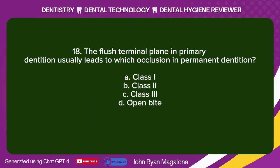Question 18: The flush terminal plane in primary dentition usually leads to which occlusion in permanent dentition? A. Class 1. B. Class 2. C. Class 3. D. Open bite. Answer: Class 1.